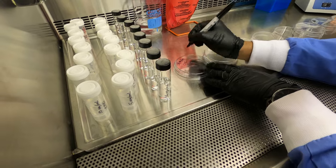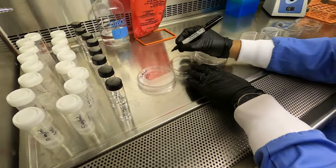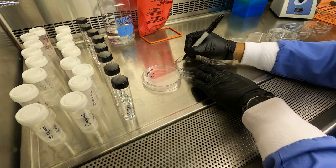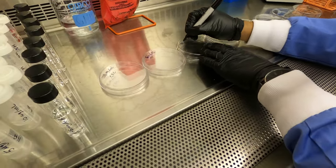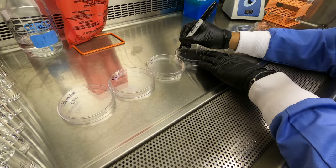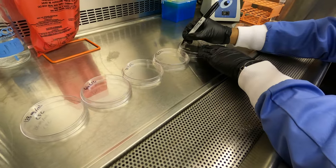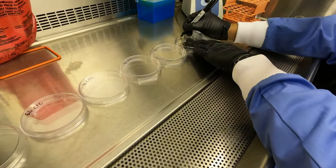The first step whenever preparing agar is to label your plates, and I recommend doing this on the bottom agar side. That way if the lids get lost, you'll always know what drug and what concentration of that drug is present in each one.